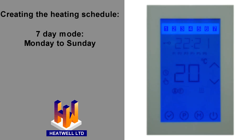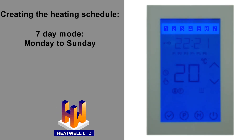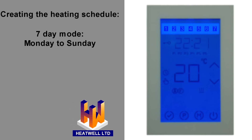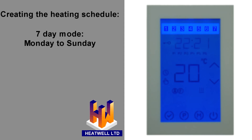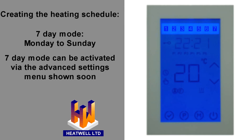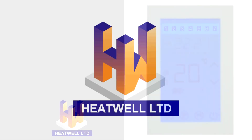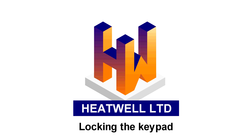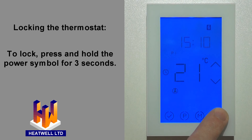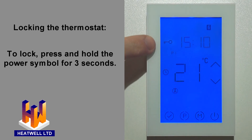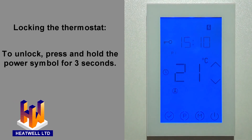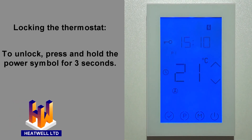7-day mode is programmed in the exact same way, with Saturday and Sunday appearing along with the weekdays. This is because 7-day mode uses the same temperatures and switch-on times all day, every day. 7-day mode is not active by default, but can be activated in the advanced settings shown shortly in the video. To lock the keypad, press and hold the power button for 3 seconds. The key symbol will appear, which means the thermostat is locked and unable to be changed. To unlock the unit, press the power button again for 3 seconds.